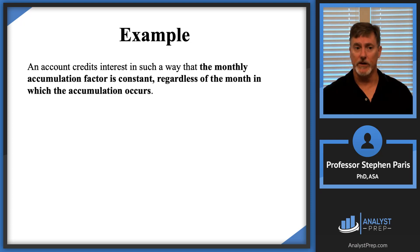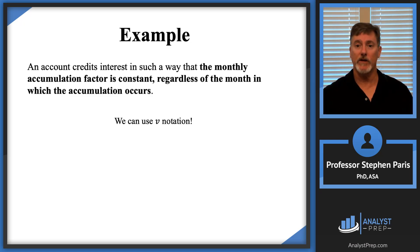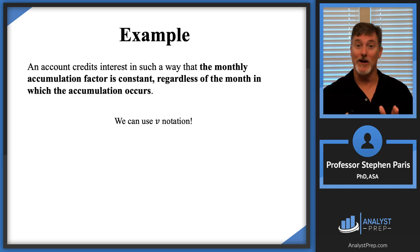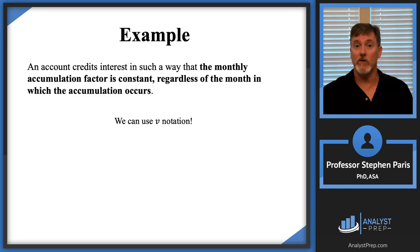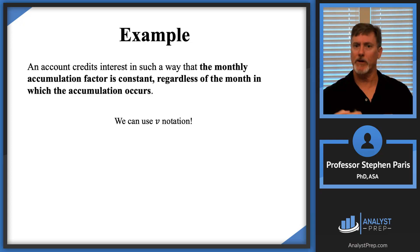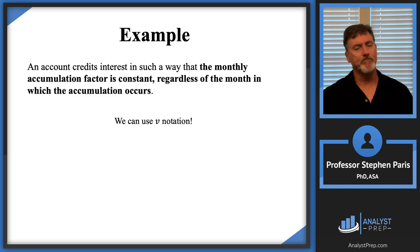I want to focus on the first sentence: the monthly accumulation factor is constant regardless of the month in which the accumulation occurs. This tells me we can use v notation. I'm not using v notation because of the word 'monthly' or 'accumulation' — it's the word 'constant' that's the reason. The problem could have said 'the annual discount factor is constant regardless of the year,' and I could still use v notation. V notation is used whenever the periodic discount factor — or equivalently the periodic accumulation factor — is constant regardless of the period.